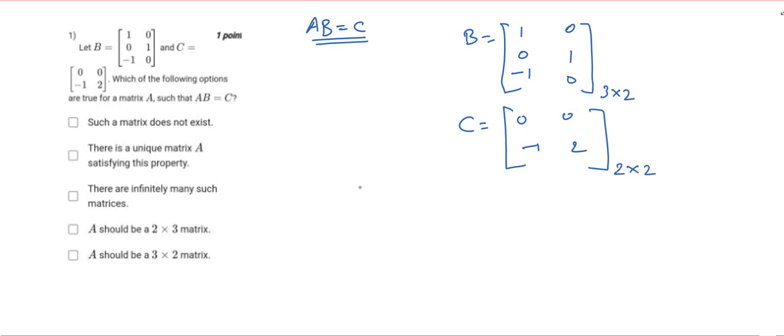There is a matrix A which is of some order m×n, which when multiplied with B of order 3×2, is giving a matrix C of order 2×2.